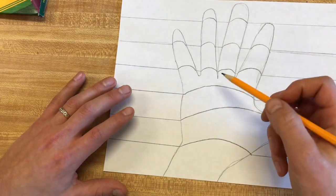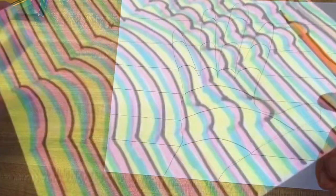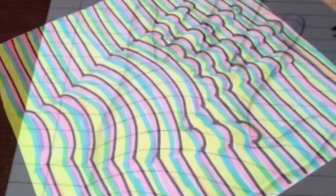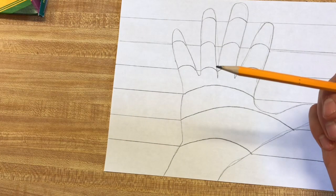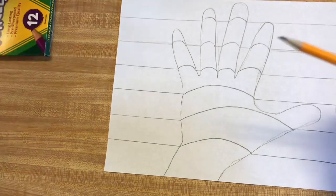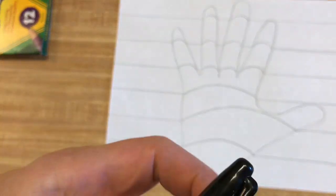Okay, so I got the whole hand done and then I got the background. Some people do them different colors, some people do them the same colors. Like I said, there's lots of different options on here. I think I'm going to use colored pencils on this, but I think I'm going to outline it in sharpie first.